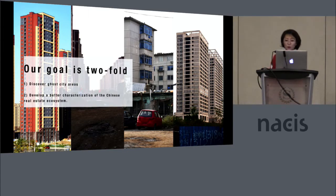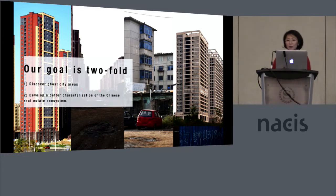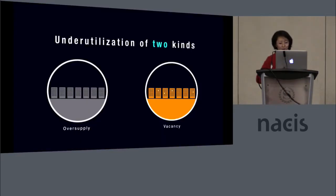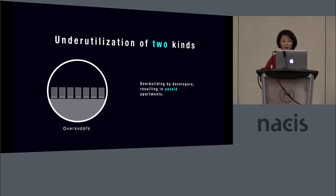Our goal here was twofold. First is to create a model that would allow us to identify Ghost City areas, or at least areas that are very good candidates for Ghost Cities. The second was to develop a better characterization of the Chinese real estate ecosystem. When we talk about Ghost Cities, we're actually not just talking about oversupply, but also vacancy — really underutilization of two kinds.